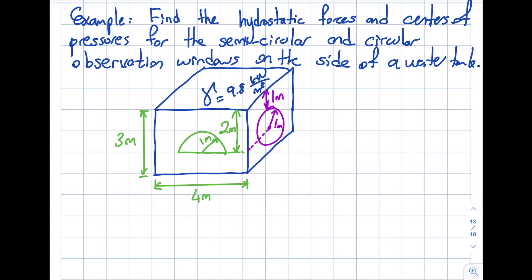Okay, in this segment I will talk about finding the hydrostatic forces and center of pressures for a semicircular section and a full circular cross-section. These are observation windows on the side of a water tank and this whole thing is filled with water, and this is open to atmosphere so basically the pressure up here will be ρgh which will be zero.